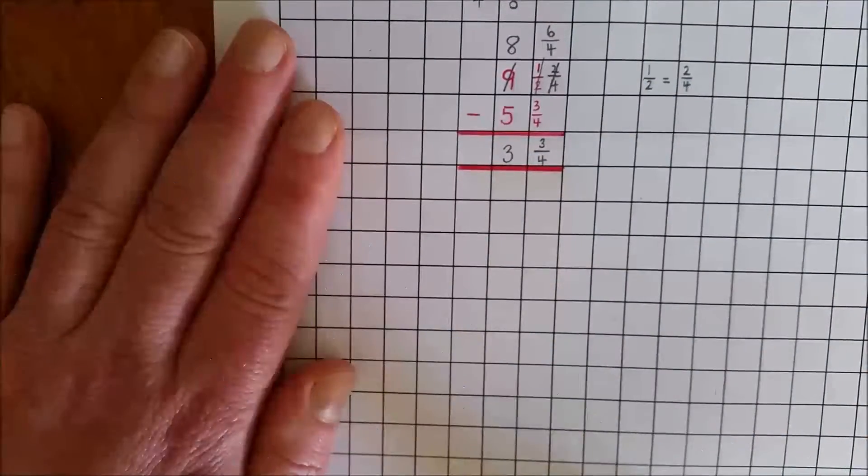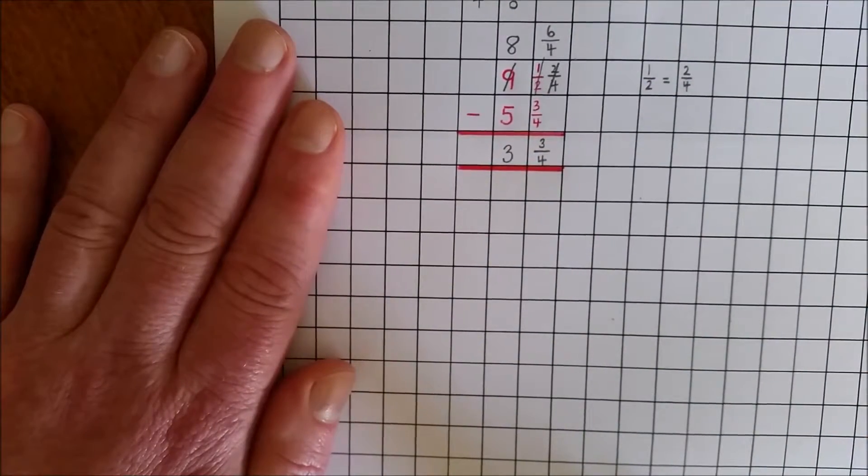So the answer is 9 and 1 half subtract 5 and 3 quarters, and the answer is 3 and 3 quarters.